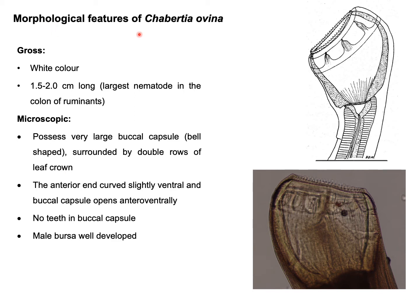The morphological features of Chabertia ovina: grossly, the parasite is whitish in color, around one to two centimeters long, which is similar to the size of Oesophagostomum species. This parasite is also considered one of the largest nematodes found in the colon of ruminants.